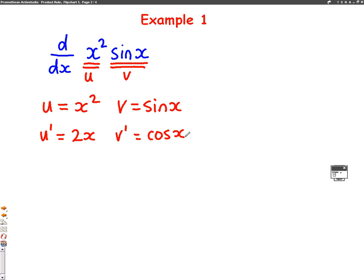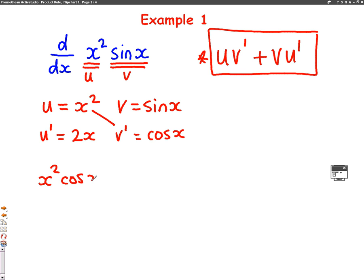This is all you need for the product rule because the answer will just be u v dash add v u dash. This is the formula for the answer. So all we need to do is put these into this formula. u v dash is x squared cos x and v u dash is 2x times sin x. When we differentiate x squared sin x, we get x squared cos x plus 2x sin x.